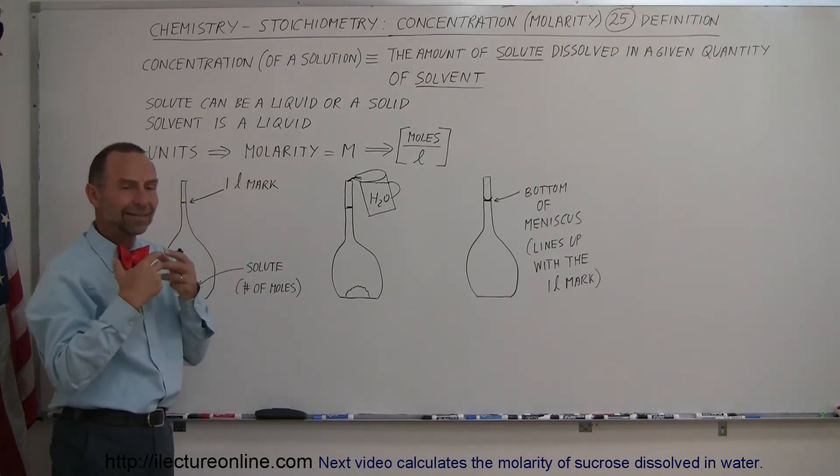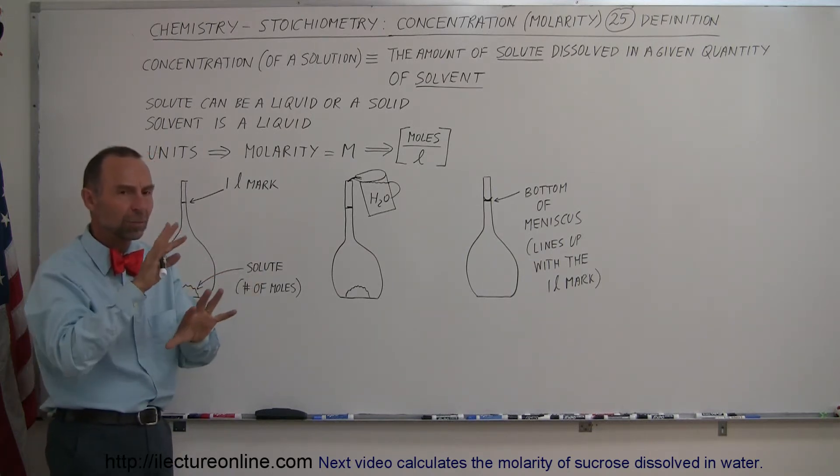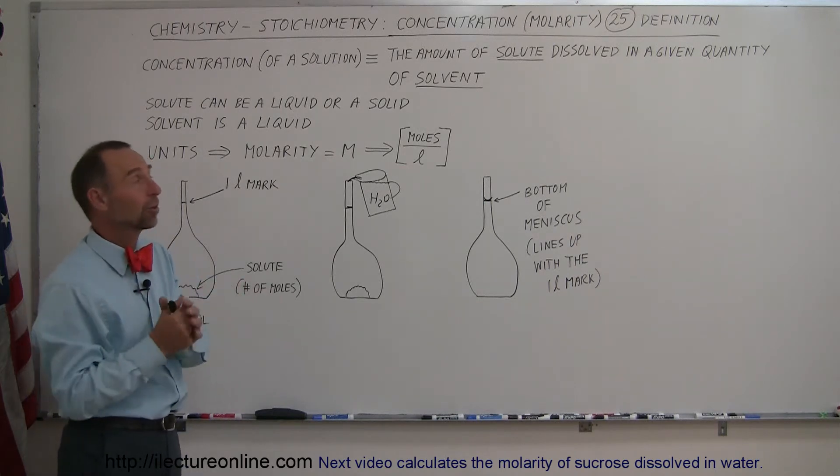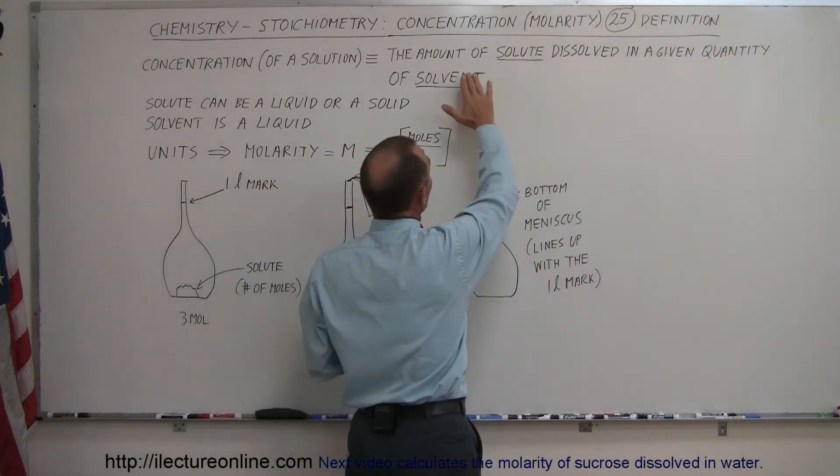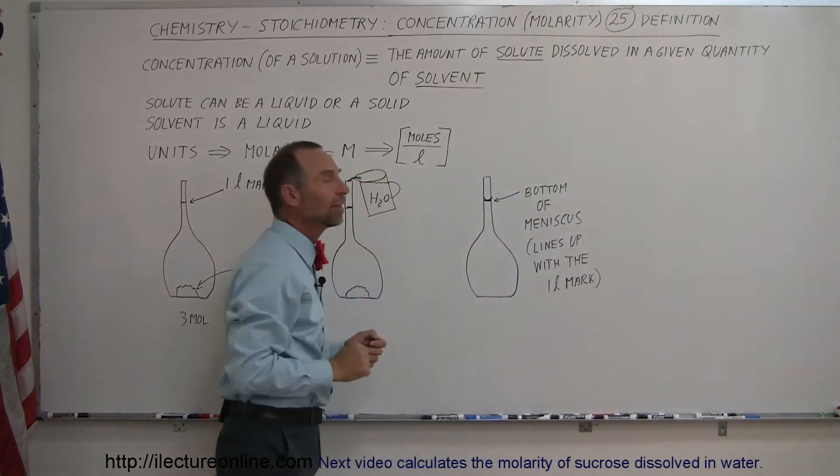But once we put it into a solvent, it seems to disappear. Usually it becomes ionic and disappears in the solution. We can't really tell that it's in there, except sometimes because of the change in color. And so the definition is the amount of solute dissolved in a given quantity of solvent.